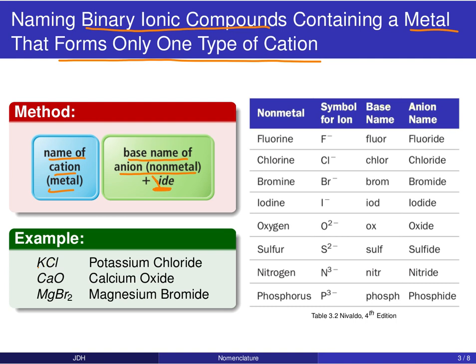Let's look at a couple of examples. If we have the chemical formula KCl, our metal is potassium, so we start off by writing out 'potassium.' Then we take the base name of chlorine, which is 'chlor,' and put an '-ide' suffix at the very end. So potassium chloride becomes the name of the compound.